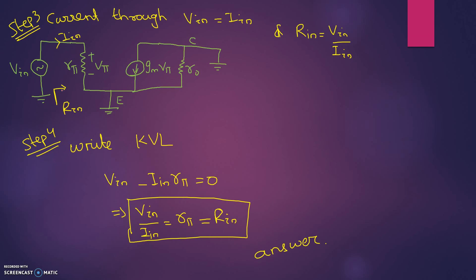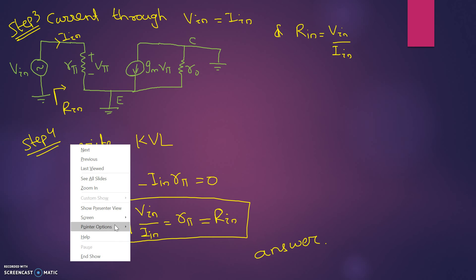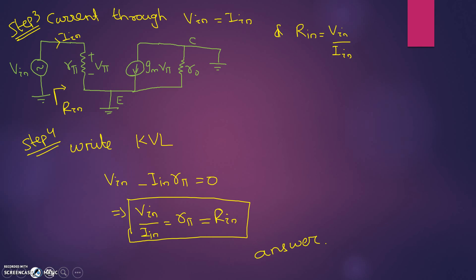We have to find R_input. Already there is a V_input in the circuit, and I_input is drawn from V_input, so R_input is V_input divided by I_input. From this circuit, we can write the KVL equation: V_input minus I_input times Rpi equals zero. Solving, V_input divided by I_input equals the input resistance, which is Rpi.